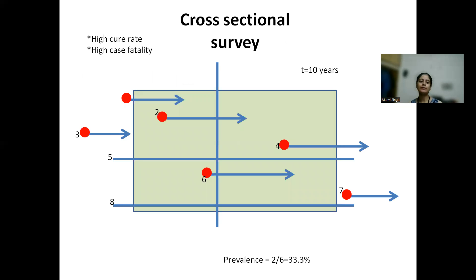So coming to the third type is cross-sectional survey. Cross-sectional survey is the survey of an entire population in which every individual is counted at a single point of time. And the disease burden is usually measured or the characteristics of the entire population are measured.